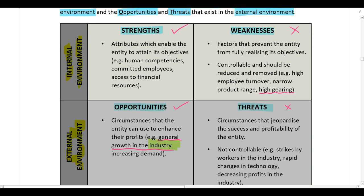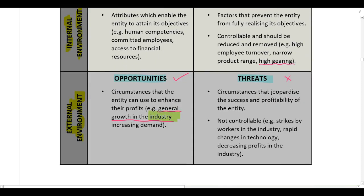An opportunity is available to all companies in that industry — if the industry is experiencing growth, all companies operating in it should be able to take advantage. It's not unique to one company. On the other hand, threats are circumstances that jeopardize the success and profitability of the entity and are not controllable, such as strikes by workers in the industry, rapid changes in technology, or decreasing profits.